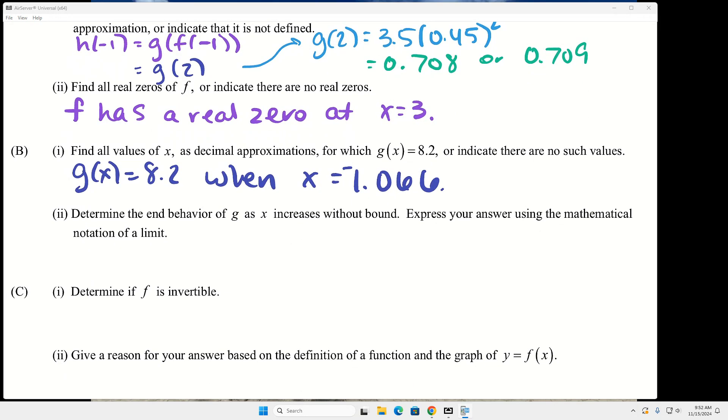So on the end behavior, I would like for you to write a sentence that tells it, but it's absolutely required that you do a mathematics. So both is great, but if you just do the limit, I think they'll take it. But if you just write the sentence, you won't get the point. So the sentence would be something like, as x increases without bound, g of x approaches zero.